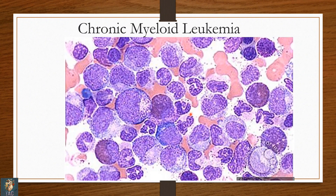Another view of chronic myeloid leukemia. You can appreciate different shapes of neutrophils — bilobed, multilobulated, band-shaped, and metamyelocytes. Metamyelocytes are cells which have indentation in their nuclei, as well as myelocytes. The diagnosis is chronic myeloid leukemia; the patient will have a total leukocyte count above normal limits.